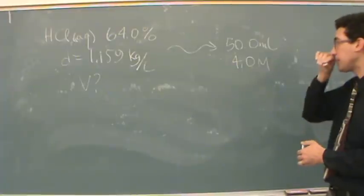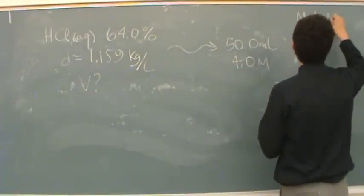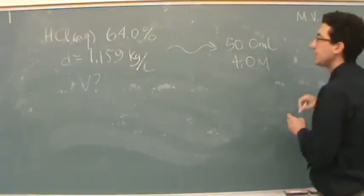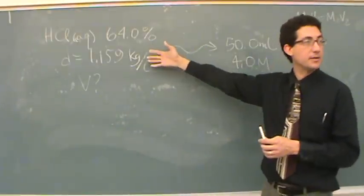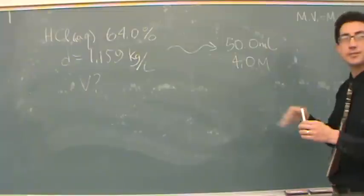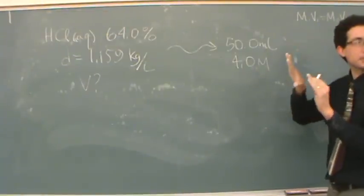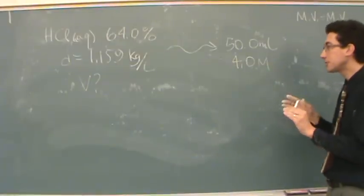The only thing keeping us back from going straight to the M1V1 equals M2V2 is that we don't have molarity here. So we need molarity first from these numbers. I need to do a conversion sort of problem, then I'll do a dilution sort of problem. So it's a combo of those two which is common.